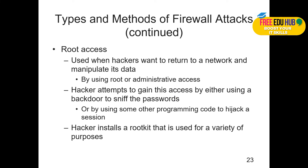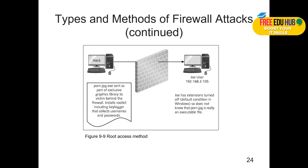Root access is used when hackers want to return to the network and manipulate data using root or administrative access. Hackers attempt to gain this access by using a back door, sniffing passwords, or using programming code to hijack a session. A hacker installs a rootkit used for a variety of purposes — it can perform different operations automatically. He'll send a rootkit or malicious code to a remote computer via email or by copying files using a USB device, such as if a contractor visiting an organization gets access to a PC and copies files to it.